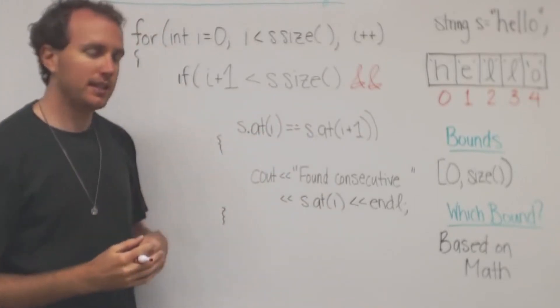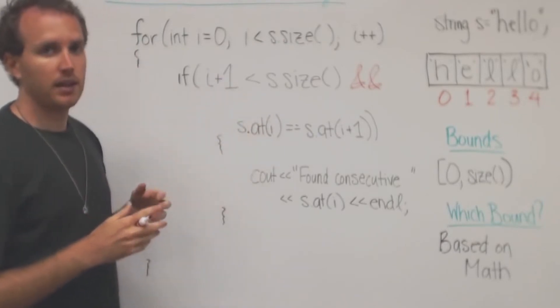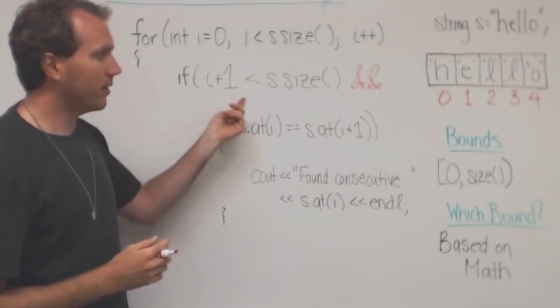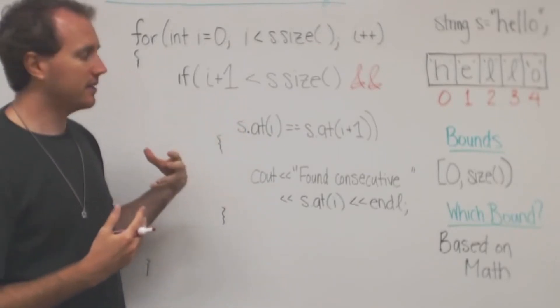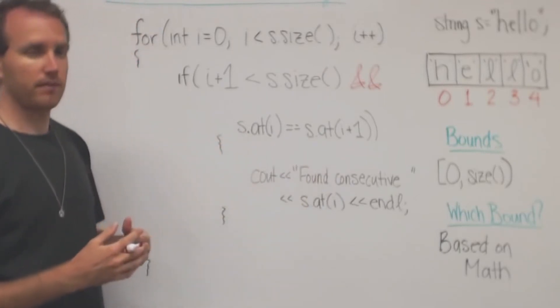And the thing about short-circuiting is when you have a false to begin with, it doesn't evaluate the second one. So if we are going to go out of bounds, if I plus one is out of bounds, then it won't run this piece of code.